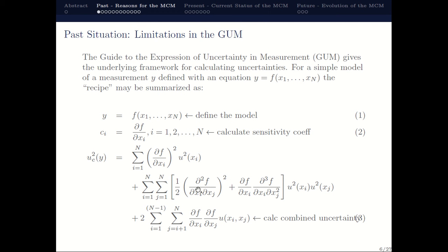There may be a variety of people in the audience at different technical levels and different levels of mathematics, so I'll keep the talk in general terms and keep the mathematics as minimal as possible. To summarize the recipe of how to develop the uncertainty: you start with the model, you define the model, you calculate the sensitivity coefficients with the partial derivatives, and then you essentially root-sum-square everything — you add all the terms in quadrature. This is the traditional GUM. There are also terms for non-linear effects and for correlations or covariances.